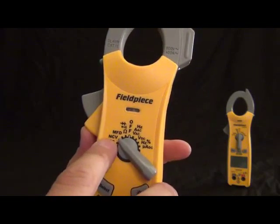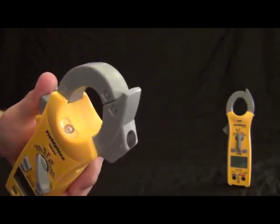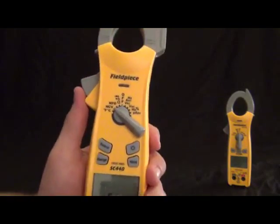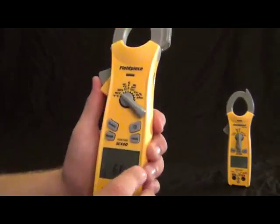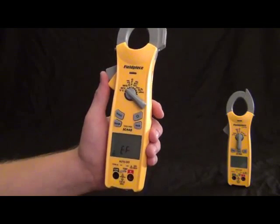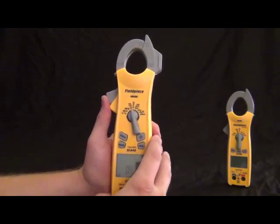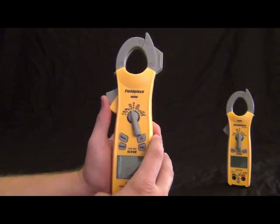Hertz, amps, and volts, that's hertz and amps with the clamp. And this all still has a jaw light. And volts with the leads. Volts DC, hertz, and duty cycle, that one's with the leads. And then microamps DC. Still a K-type temperature probe, selector switch. And that is the SC400 series.